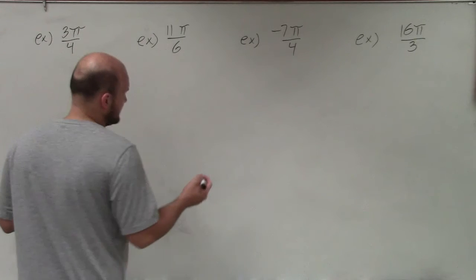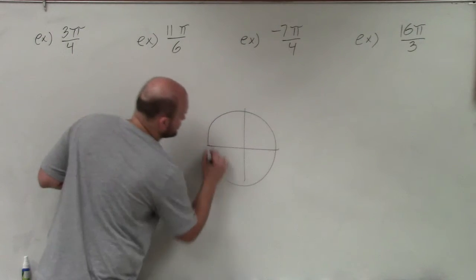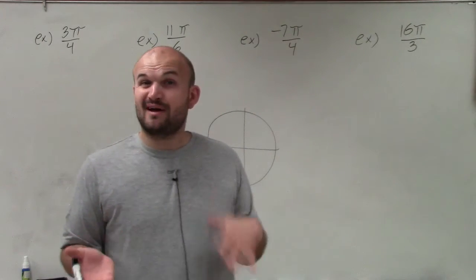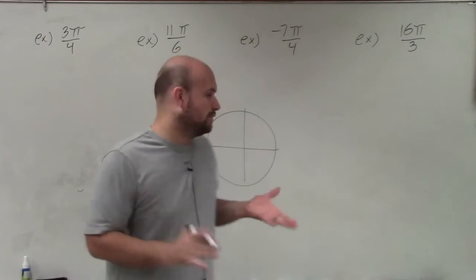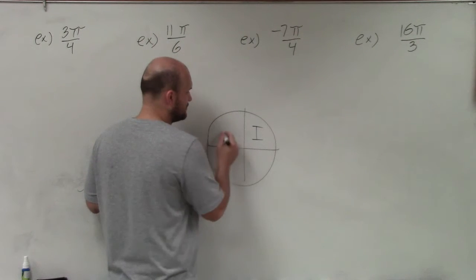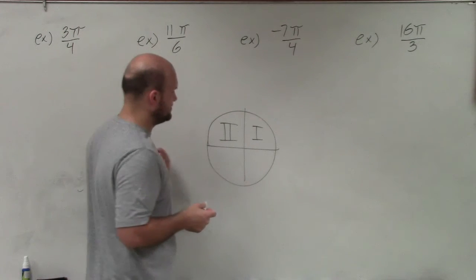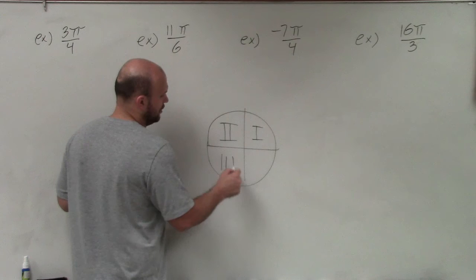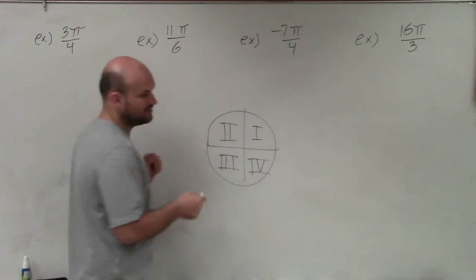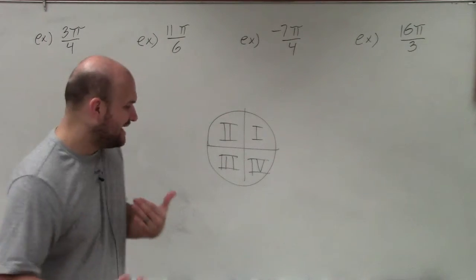The main important thing before we even get started is to make sure that we understand what the quadrants are. In the upper right-hand corner, which is positive-positive, would be quadrant one. In the upper left-hand corner is quadrant two, where x is negative and y is positive. In the lower left-hand corner is quadrant three, and the lower right-hand corner is quadrant four. It's very important that you have those written down when trying to identify the quadrants.